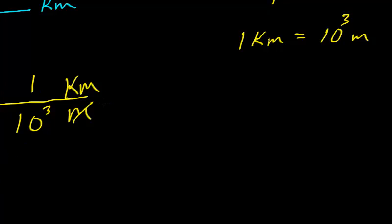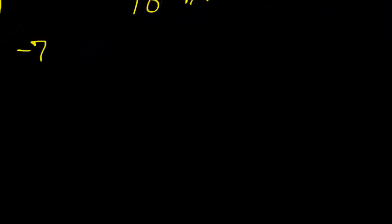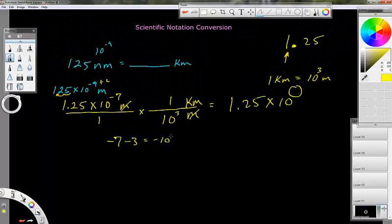Then the meters would cancel, and this is just a single step conversion. All you have to do is remember this will stay the same, 1.25, and the only thing that changes is this exponent. We have to fill in this little mystery exponent, and the way that you do it is you subtract exponents. So it's negative 7 minus 3, which would be negative 10. So this would be negative 10 right there.